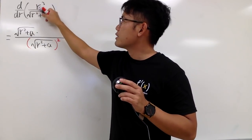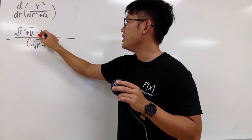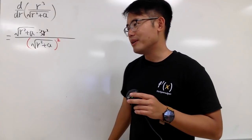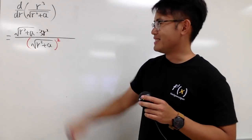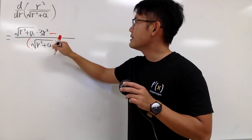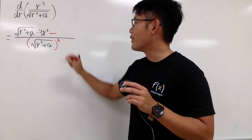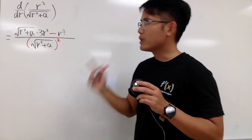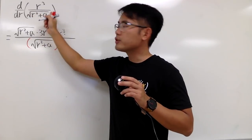The derivative of r to the third power is 3r squared. Then we minus the top function, which is r to the third power, and multiply by the derivative of the bottom function.